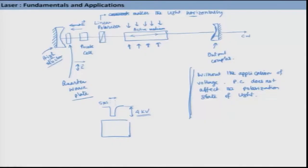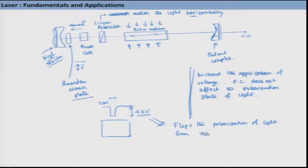Welcome back. We were discussing Q-switching phenomena, particularly how we can use a Pockels cell to form a Q-switch. Let us start from where we stopped last time. We said that we applied 4 kV voltage for a very short duration of 5 microseconds, and this particular voltage causes it to flip the polarization of light from vertical to horizontal again - again because it was initially horizontal.